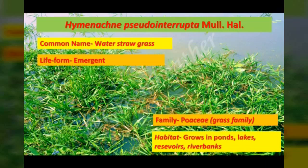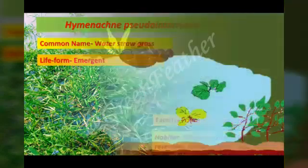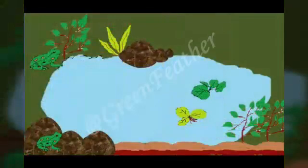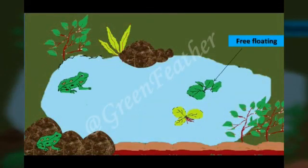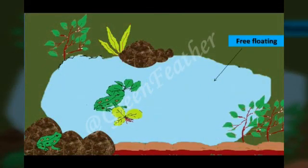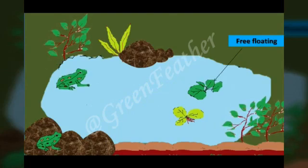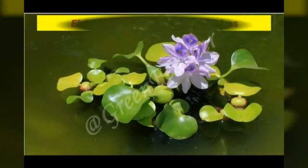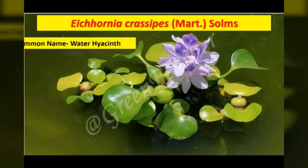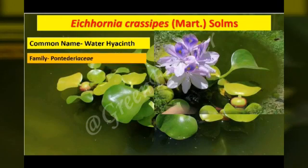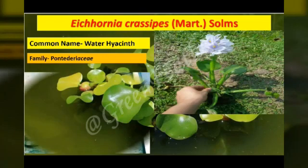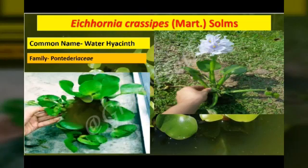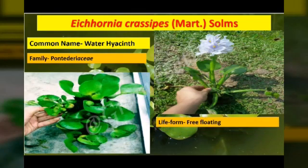It is an invasive weed in many parts of the world. Coming to the free-floating forms, these are the group of aquatic plants that float freely on or under the water surface. Eichhornia crassipes, commonly known as the water hyacinth, is a common example of the free-floating form. It grows in all types of freshwater, from lakes to river swamps, reservoirs, and other aquatic habitats.